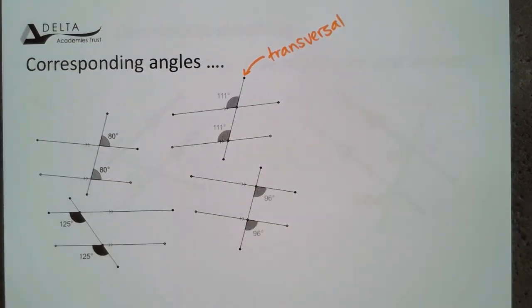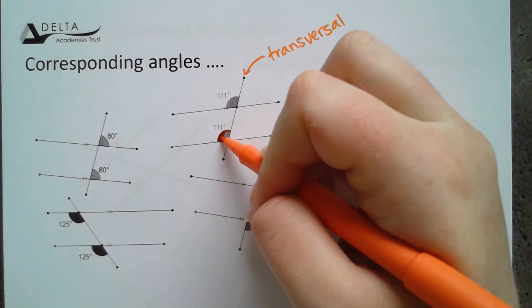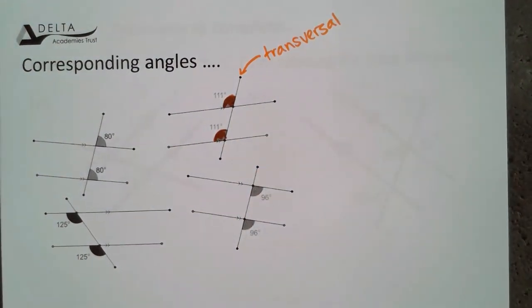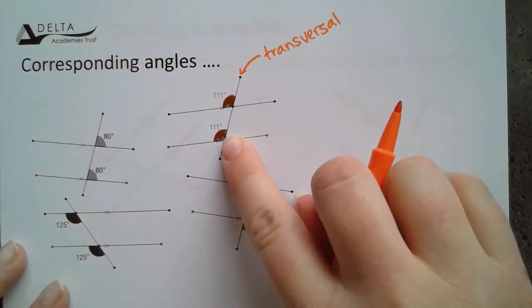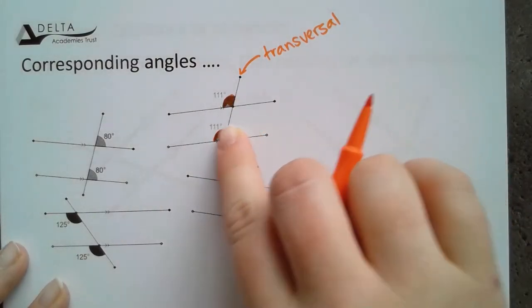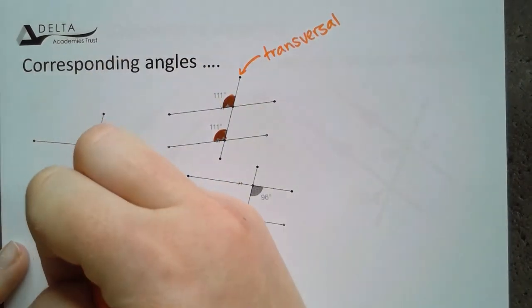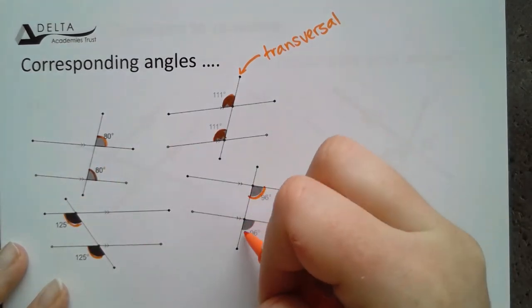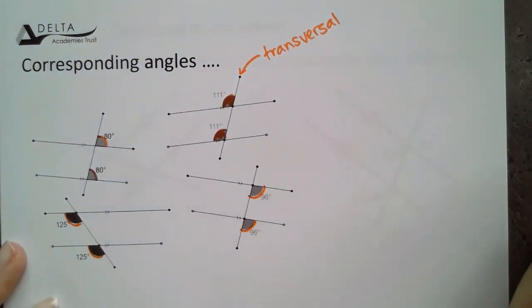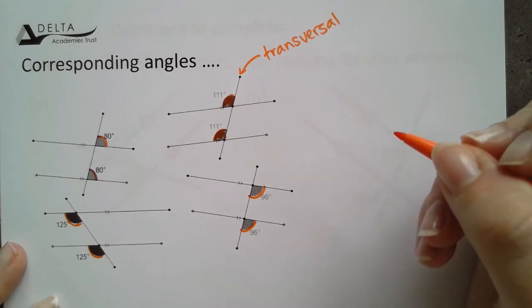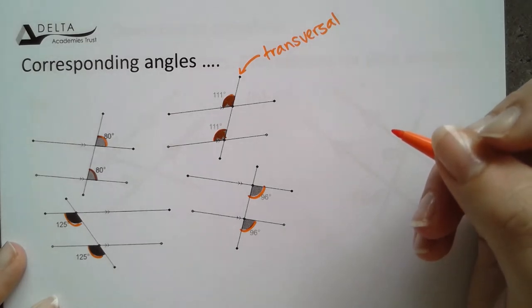Remember that your transversal is this line that crosses all of your parallel pairs. Instead of being on opposite sides of the transversal, we've actually got the angles in the same side and the same relative position in that cross, in the vertex. So these are always in the top right, these in the bottom left, and these in the bottom right. So all of these are corresponding angles.